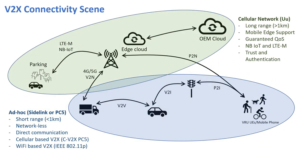Long-range V2X communication is for distances over one kilometer and uses the usual cellular interface common in mobile phones. Cellular networks bring additional benefits for V2X, including mobile edge computing support and quality of service guarantees. IoT applications can also be supported to connect vehicles to smart homes and automated parking systems, using standards such as Narrowband IoT or LTE-M.